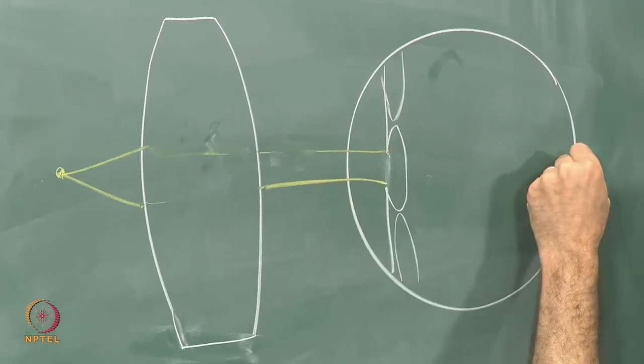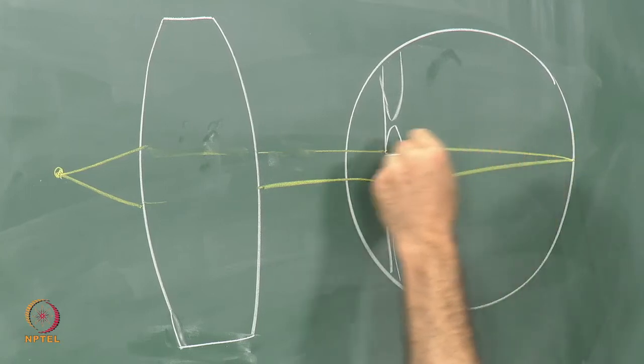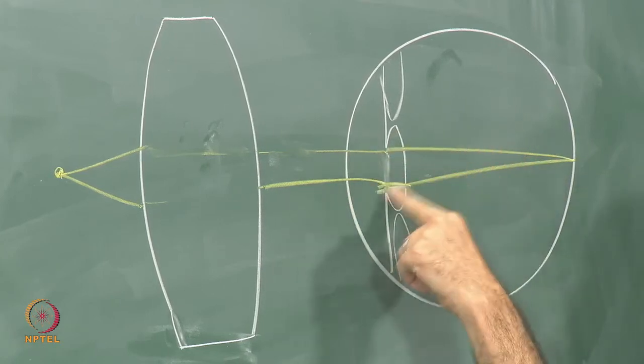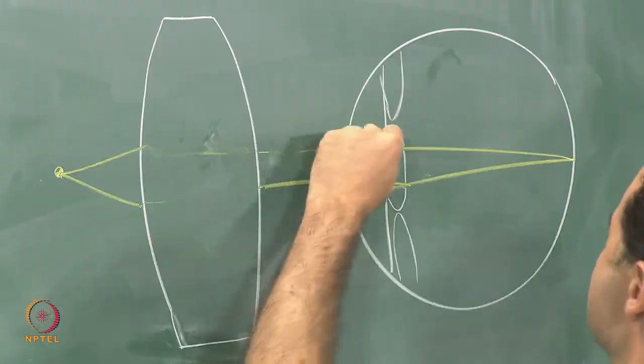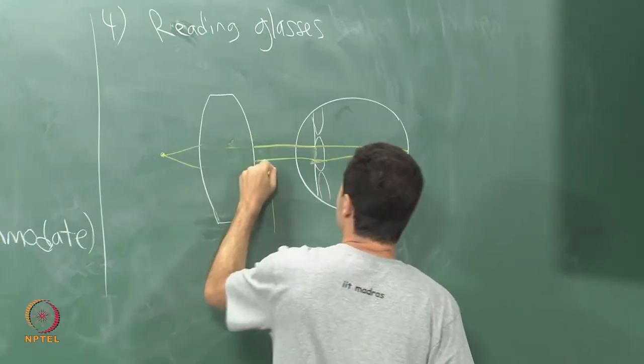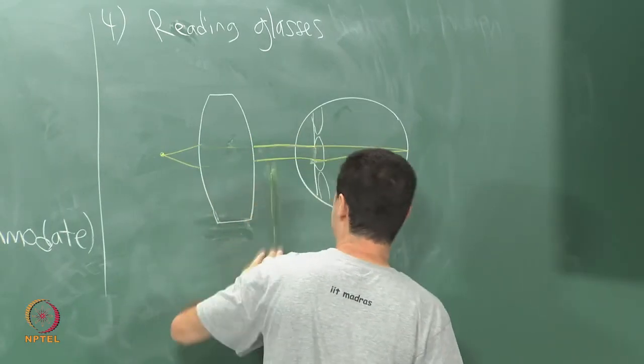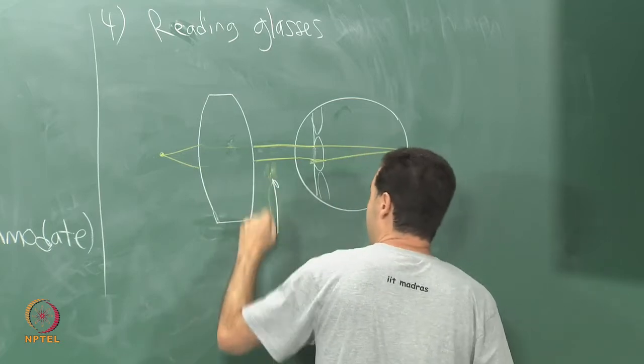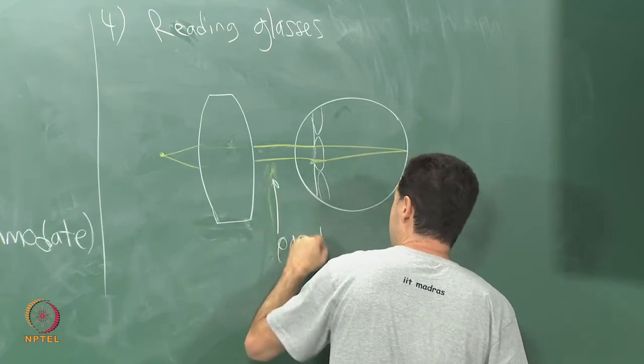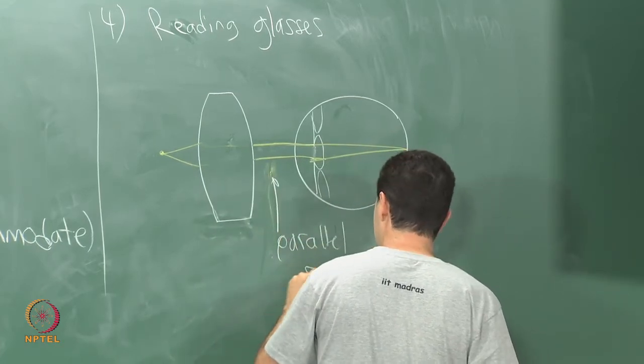It's kind of hard to get this from the way I have drawn it but it should come out parallel. Then when it goes through here it could converge to the back of the retina and be just fine, right? It should all match up nicely here. Here they should be parallel rays.